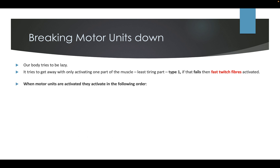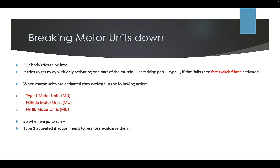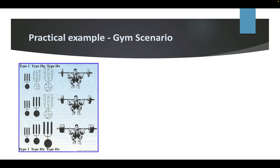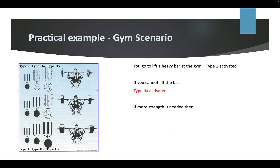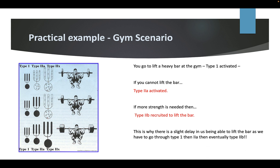If Type 1 fails, then the fast twitch fibres are activated. When motor units are activated, they activate in the following order: Type 1, then Type 2A, then Type 2B. So when we go on a run, Type 1 is activated; if action needs to be more explosive, Type 2A is recruited; and if even more power is needed, Type 2B is activated. Practical example: you go to lift a heavy bar at the gym — Type 1 is activated first; if you can't lift the bar, Type 2A is activated; if more strength is needed, Type 2B is recruited. This is why there is a slight delay in being able to lift the bar, as the body progresses through Type 1, then Type 2A, and eventually Type 2B.